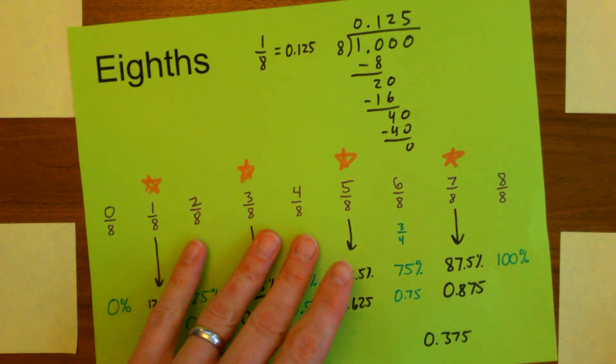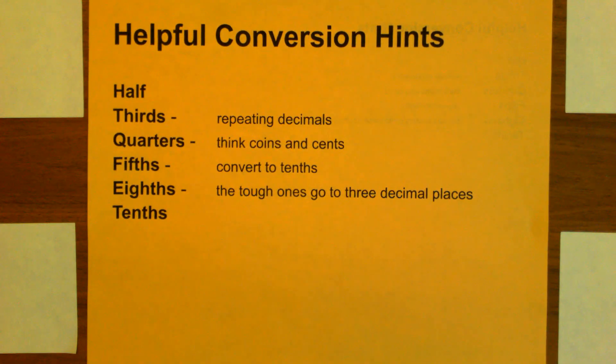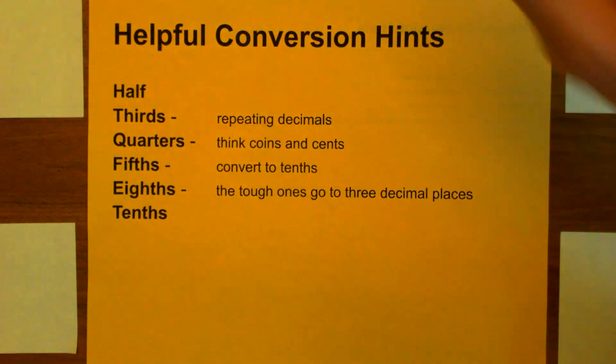I think hopefully that will help you with those. When you do a bunch of them, you're just going to start to remember a lot of these. But if you forget them, it's always good to have a plan on how to actually figure it out and calculate it. I hope these little tips and strategies will be helpful for you as you're doing these conversions. Good luck.